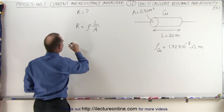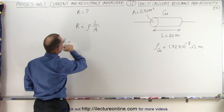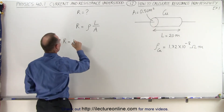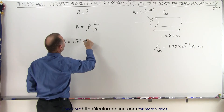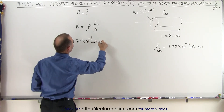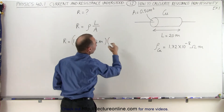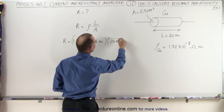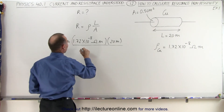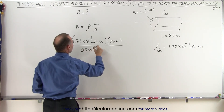When we plug in the values, the resistance of that piece of wire is equal to 1.72 times 10 to the minus 8 ohm·meters, multiplied by the length which is 20 meters, all divided by the cross-sectional area which is 0.5 centimeters squared.